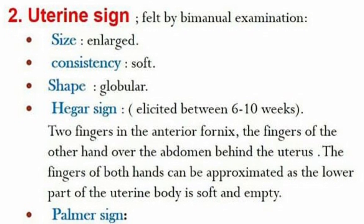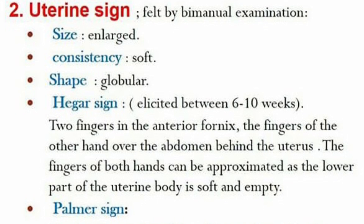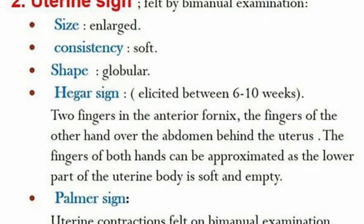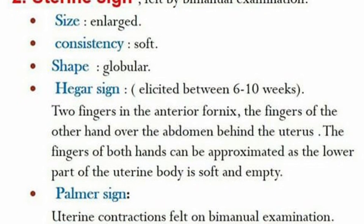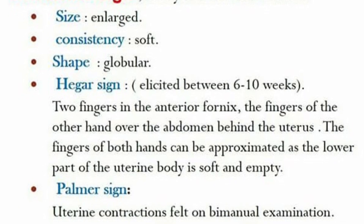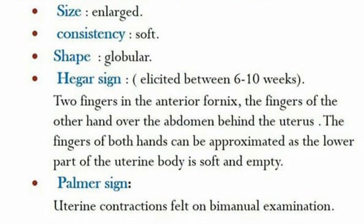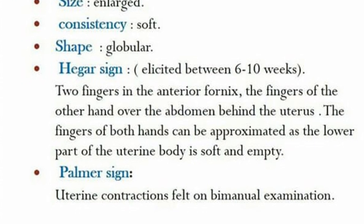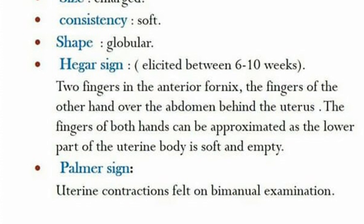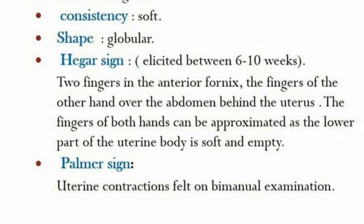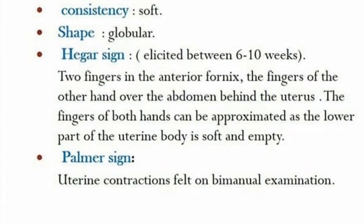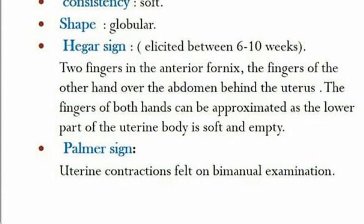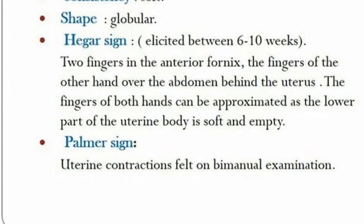Now let's talk about the uterine signs, which are felt by bimanual examination. We are able to assess the size, which is enlarged, with a soft consistency and globular shape. Another important uterine sign is Hegar's sign, which can be elicited between six to ten weeks. Two fingers are placed in the anterior fornix and the fingers of the other hand above the abdomen behind the uterus, whereby the fingers of both hands can be approximated as the lower part of the uterine body is soft and empty. Lastly, Braxton Hicks contractions are felt on bimanual examination.